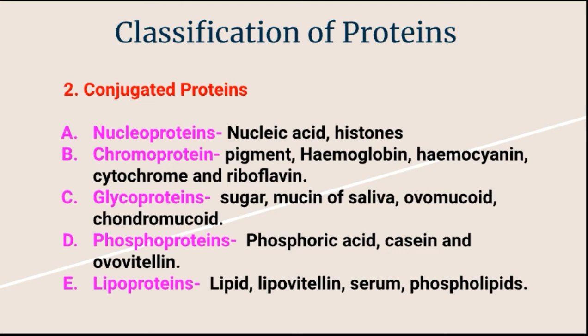In glycoproteins, the total hydrolysis or total breakdown yields sugar or sugar-like substance as a prosthetic group. It means the protein is combined with a sugar-like substance — that is called glycoprotein. Next is phosphoproteins. In phosphoproteins, the protein molecule remains connected with phosphoric acid, which is taken to be the prosthetic group. For example, casein of milk and ovovitellin of egg.